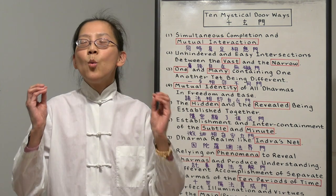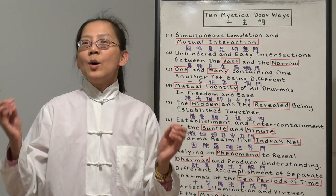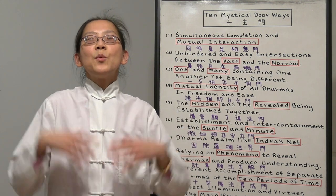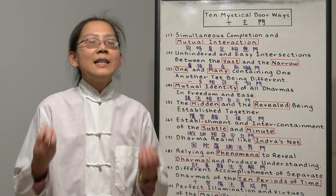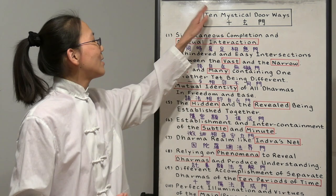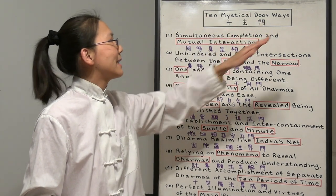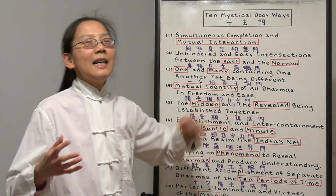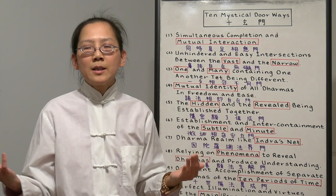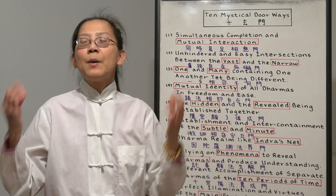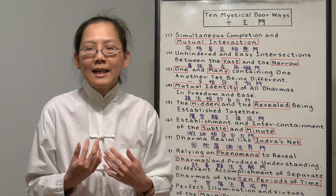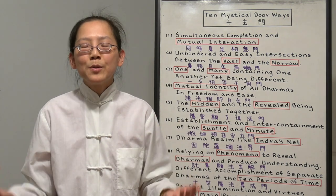There shouldn't be any wars, conflicts, arguments, or problems. In the world of the mind, everything is perfect. That's why it's called the 10 mystical doorways. Everything is 10 in this Huayin school of Buddhism. 10 is not a number. 10 means perfect in Buddha's mind. And we all have the Buddha mind.